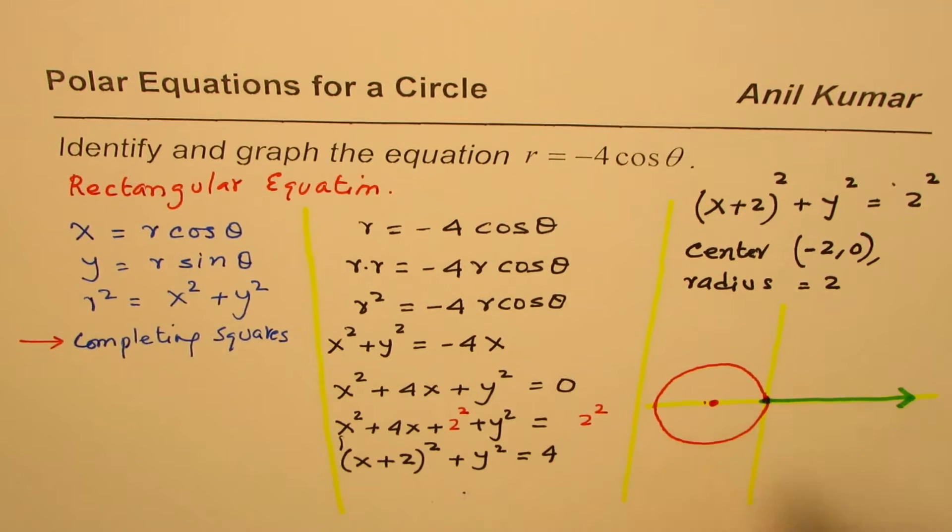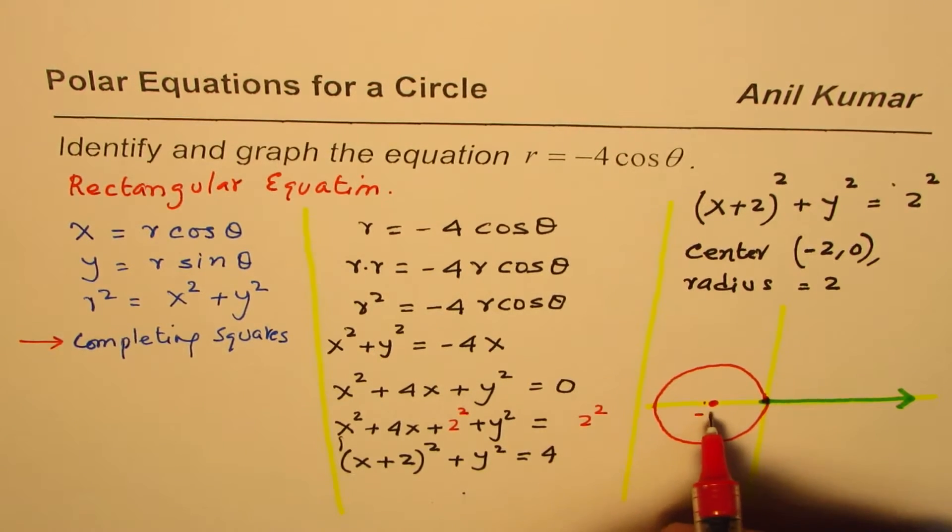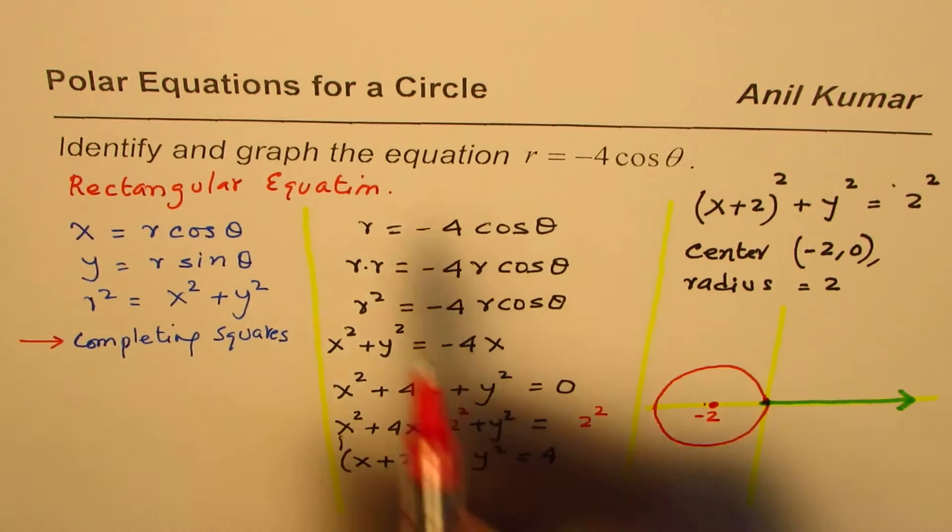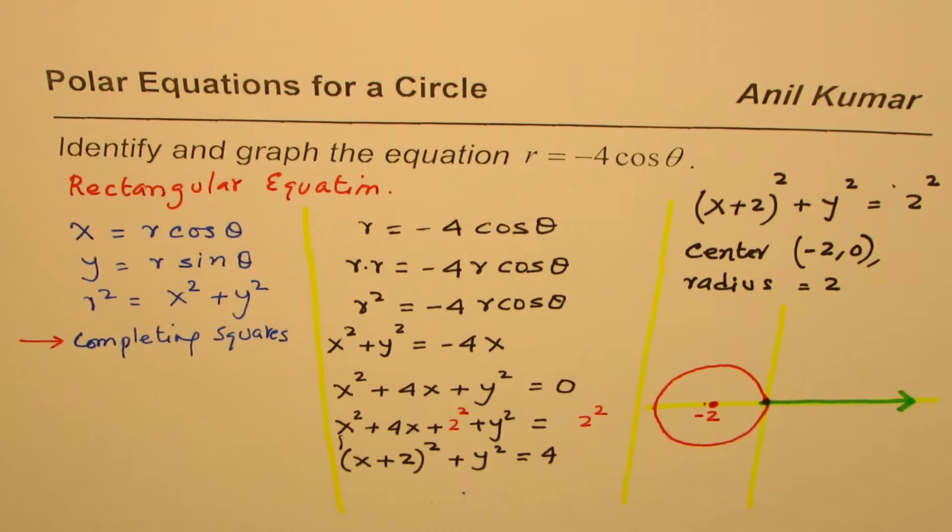So, let me now shift the center at this point, which is at minus 2. So, that becomes the graph for the given equation, correct? So, as you see from here, any equation of that form actually gives us graph of a circle.